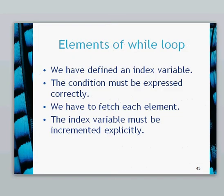The elements of a while loop — the bits we need: we need to create an index variable. We must express the condition correctly. This is where we may encounter some infinite loops if we don't set this up correctly, so we've got to express our Boolean condition carefully. Rather than searching through a specific collection, we now need to fetch the elements by each element index. You specify an element number and then you'll get the correct element back.